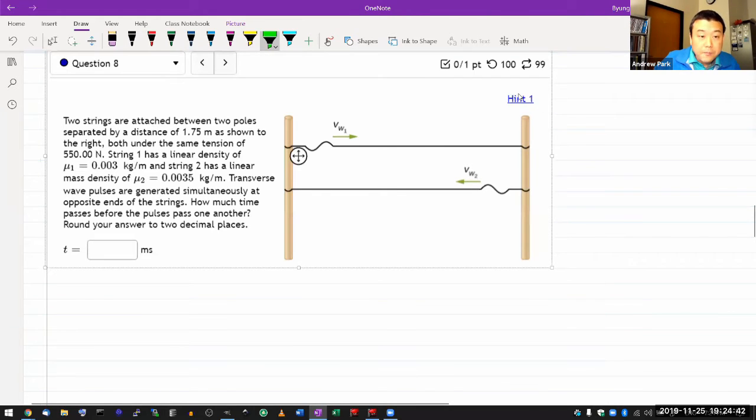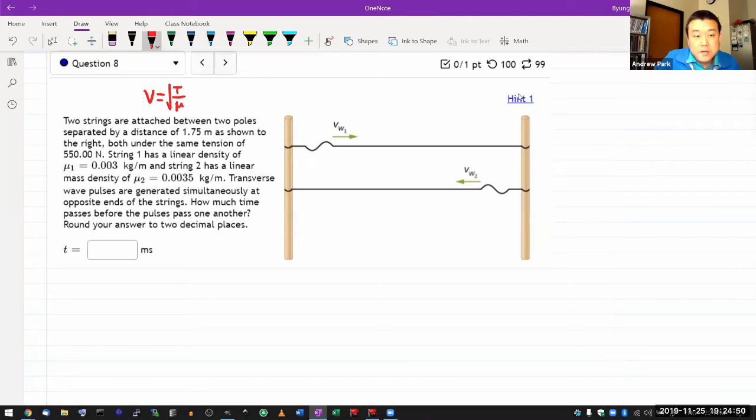Now the thing that you do have to memorize is that formula again, that wave speed for wave on a string is given by square root of tension per linear mass density. So you are given the linear mass density of the two strings. You are told that they have the same tension T. So you have to write out my wave speed here is the square root of T over μ1. And my wave speed here is also square root of T over μ2. And it's two different speeds.